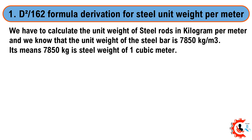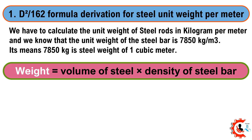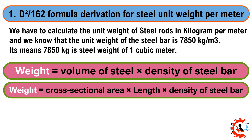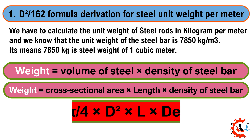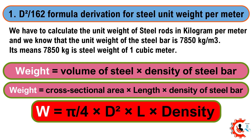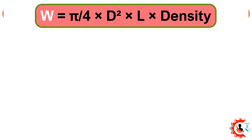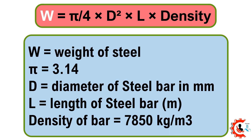Diameter squared divided by 162 — formula derivation for steel unit weight per meter. We have to calculate the unit weight of steel rods in kilogram per meter. The unit weight of the steel bar is 7850 kilograms per cubic meter, meaning 7850 kilograms is the steel weight of 1 cubic meter. Weight equals volume of steel times density of steel bar, which equals cross-sectional area times length times density, which equals (π/4) × d² × length × density. Here: π = 3.14, d = diameter of steel bar in millimeters, l = length of the steel bar, and density = 7850 kg/m³.